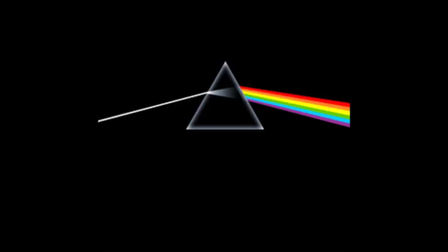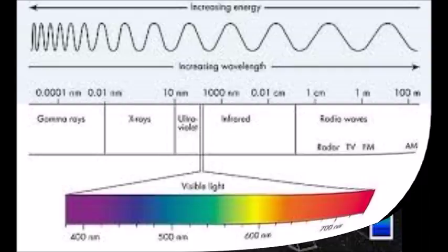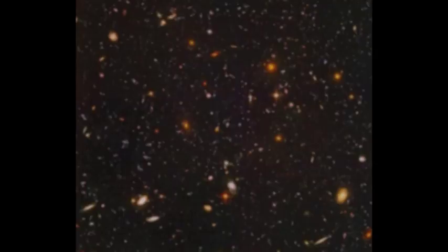Spectroscopy is the study of the absorption and emission of light and other radiation by matter. It relates to the dependence of these processes on the wavelength of radiation. Spectroscopy looks at the interactions between radiation and atoms.